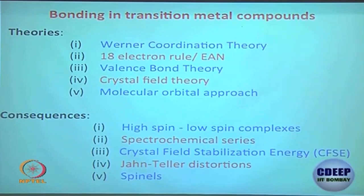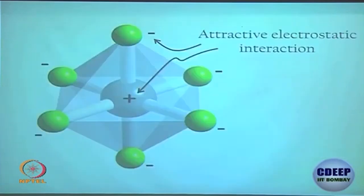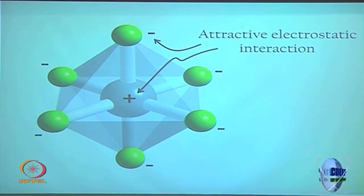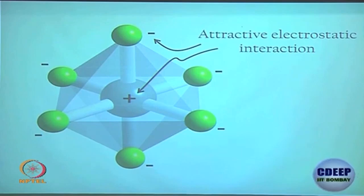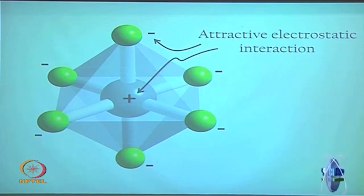I will briefly give you an overview of what we discussed in the last class. In an octahedral complex, the metal center is at the middle of the geometry. The metal and ligands have essentially an electrostatic interaction — a positive charge on the metal and negative charges from the ligands interacting with it.